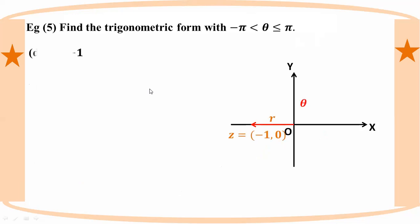The last example: the point is at minus 1 comma 0, so z equals minus 1.